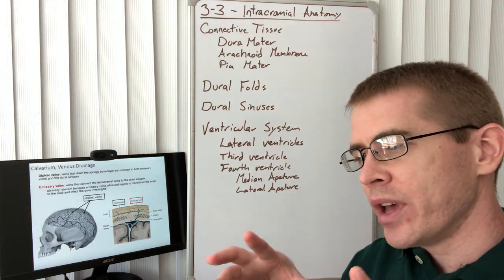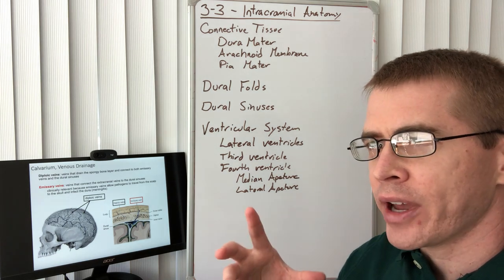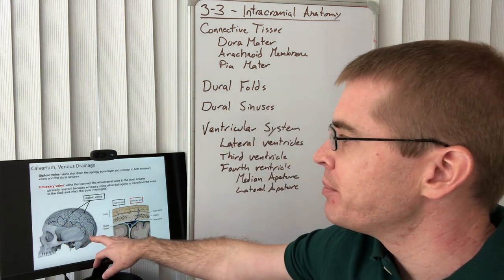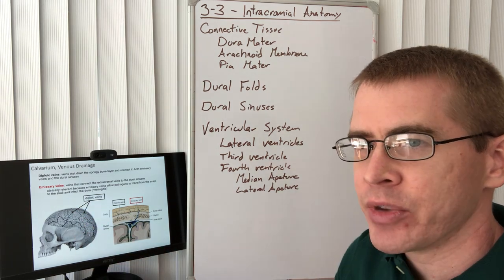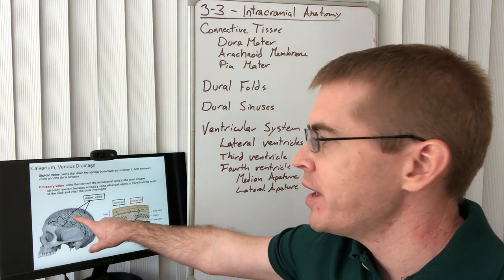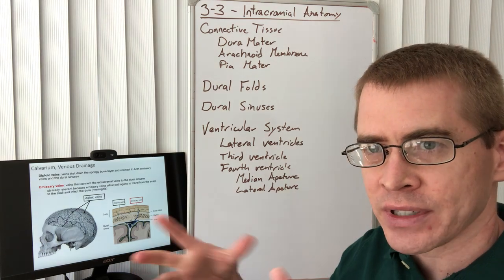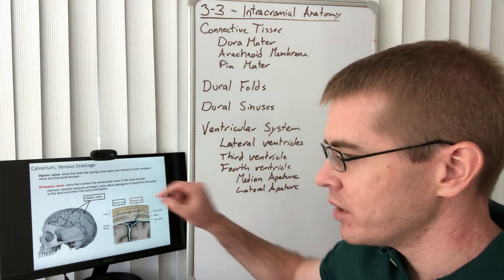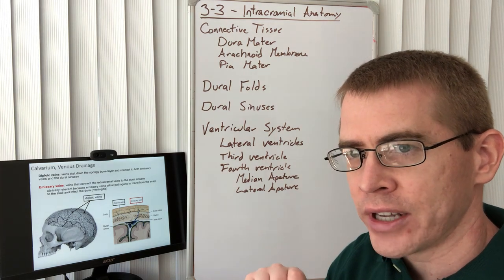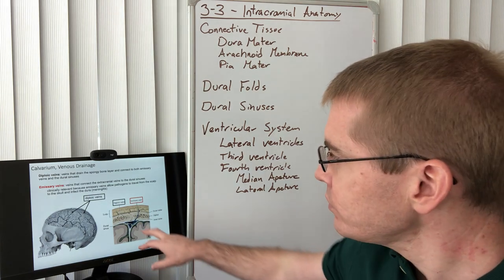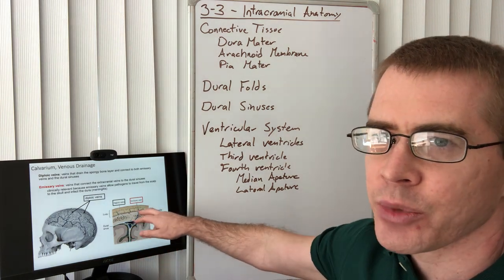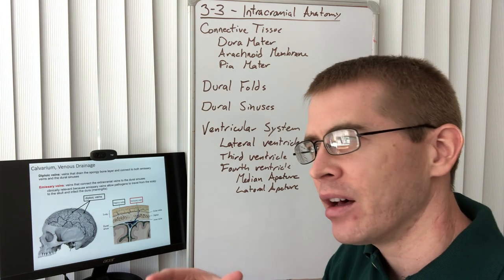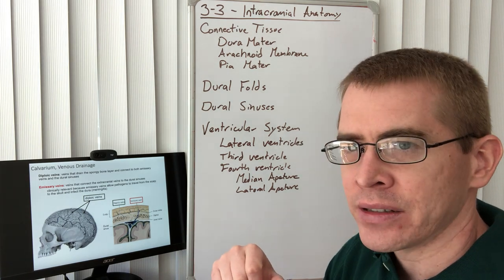The calvarium — the bone cap on top of the cranium — is drained by different structures. There are diploic veins and emissary veins. Diploic veins reside within the calvarium itself, just like a diplomat resides within a country. Emissary veins travel out from the dural sinuses to the superficial cutaneous venous drainage system. Importantly, emissary veins can flow in either direction because there is a lack of valves within the veins of the cranium.